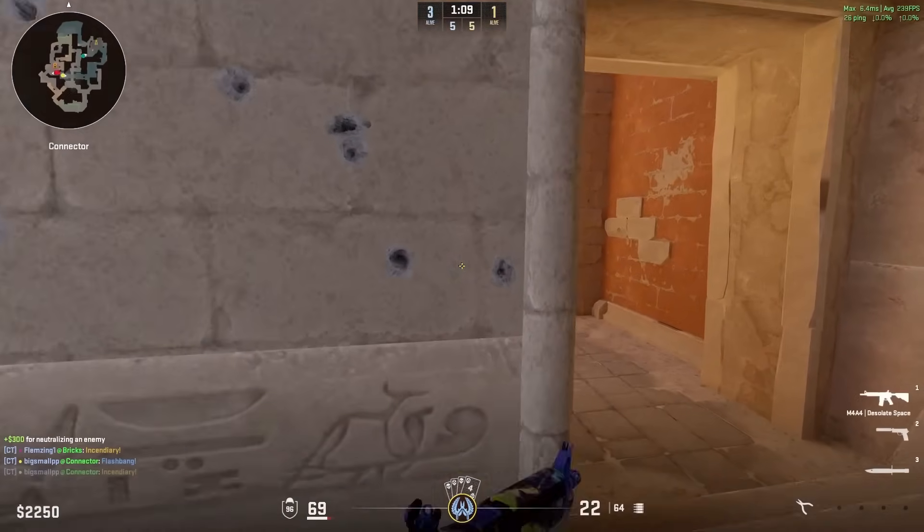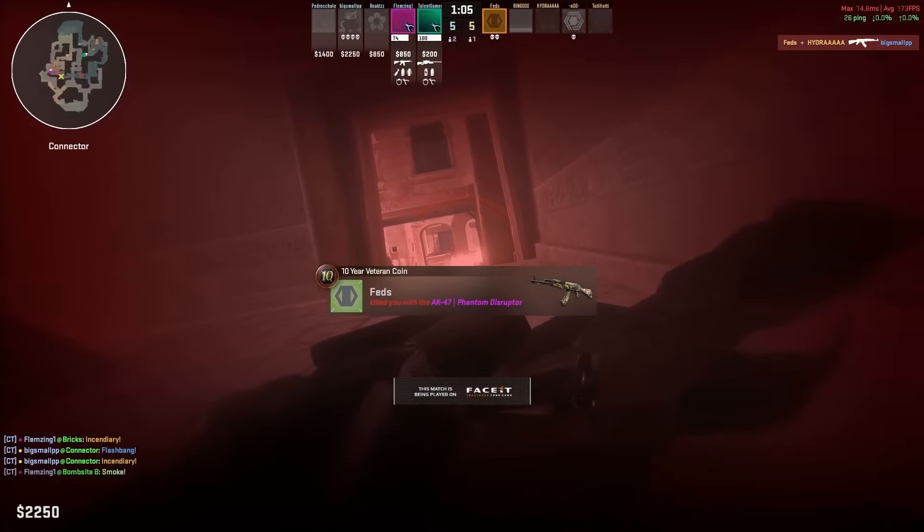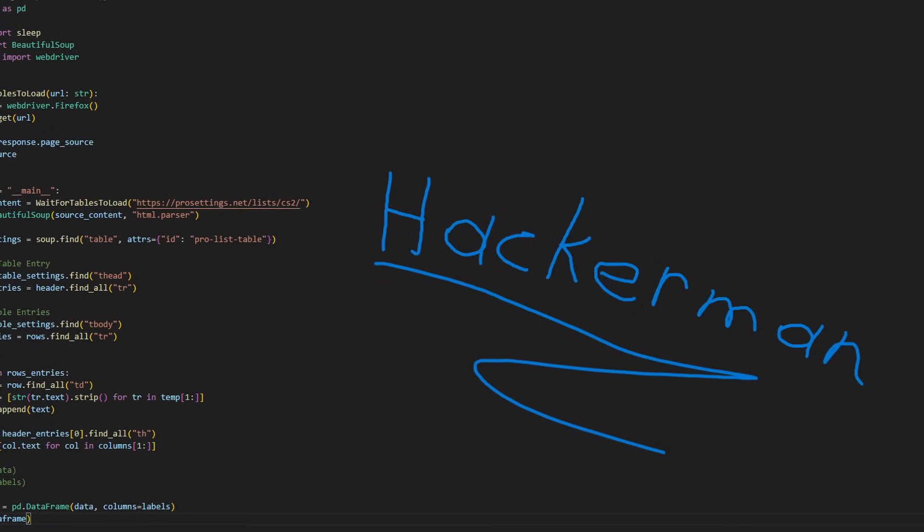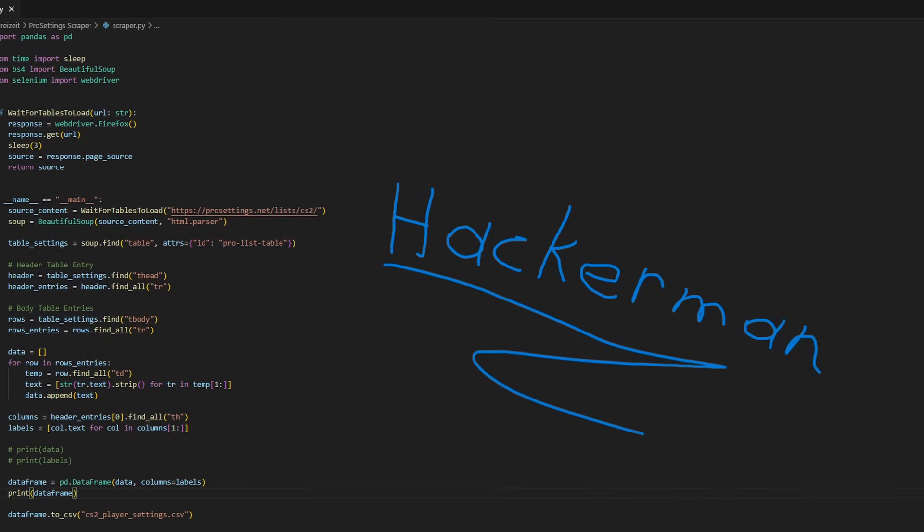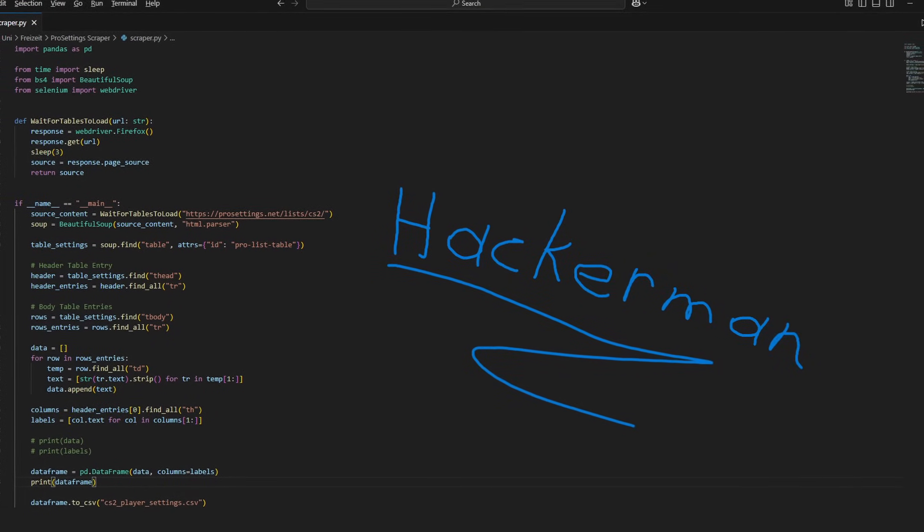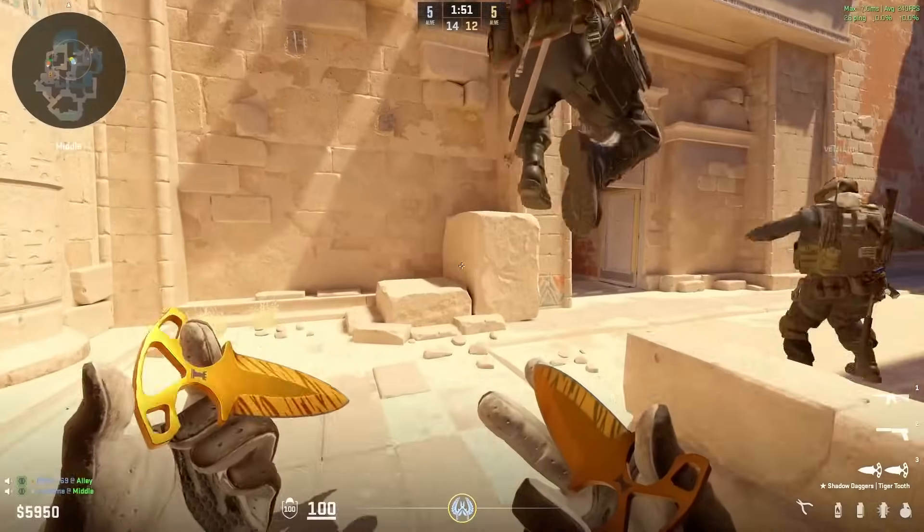First of all, to get the data from prosettings.net into a dataset we can actually do some stuff with locally, I did a bit of programming to copy everything from the website into my own little CSV file in order to skip writing down everything by hand, which would have most likely left me heavily burned out anyways.